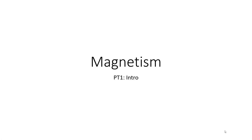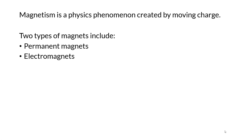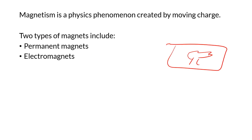This is our lesson on magnetism. We're going to start with an introduction, which includes what two types of magnets are. There's one type of magnet - you bring home a nice picture of a tree, stick it to the refrigerator, and you use what we call a permanent magnet.